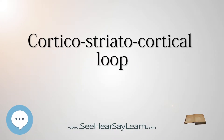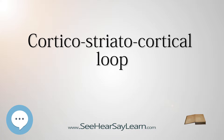In the corticostriato-cortical loop, the cortex sends excitatory glutamatergic input to the striatum, which modulates the globus pallidus interna (GPI) and the substantia nigra reticulata (SNR). The GPI and the SNR in turn send inhibitory GABAergic projections to the thalamus, which provides glutamatergic innervation back to the cortex. The striatum modulates the GPI and the SNR via two pathways, one direct and one indirect.